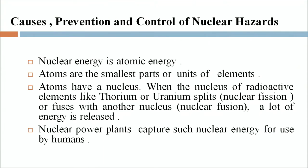The next section is nuclear hazards, their causes, prevention and control. Nuclear energy is atomic energy. Atoms are the smallest unit of elements. Atoms have a nucleus; when the nucleus of radioactive elements like thorium or uranium is split — that is nuclear fission — or fuses with another nucleus — that is nuclear fusion — a lot of energy is released. Nuclear power plants capture such energy for human use.